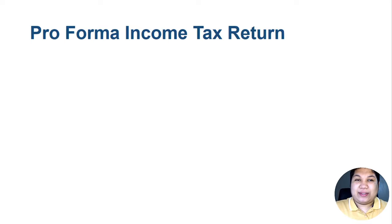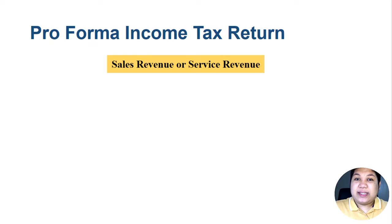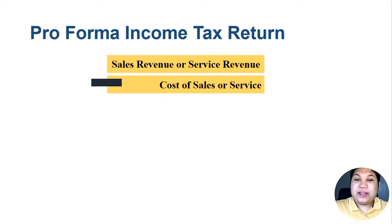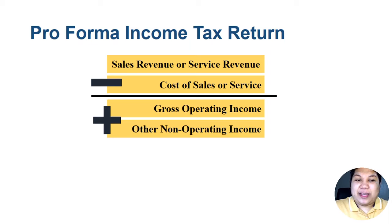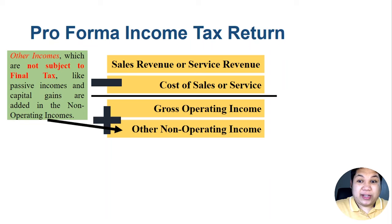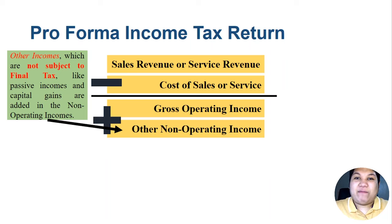Looking at a pro forma income tax return: we start with sales or service revenue, minus the cost of sales or service, to get gross operating income. After deriving gross operating income, we add other-than-operating income — incomes not subject to final tax, such as passive incomes and capital gains not subjected to a final tax or capital gains tax.